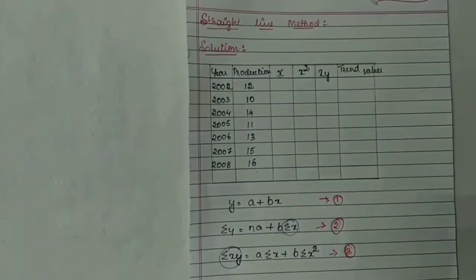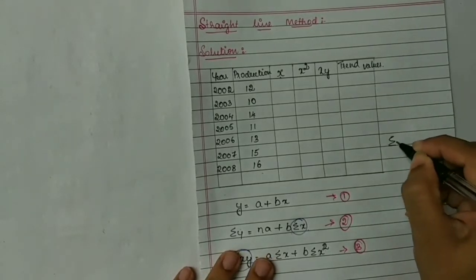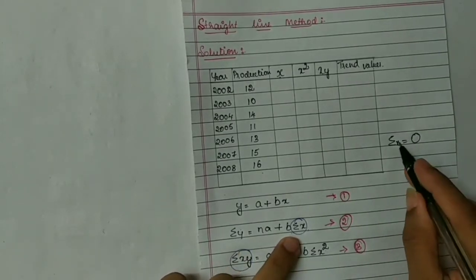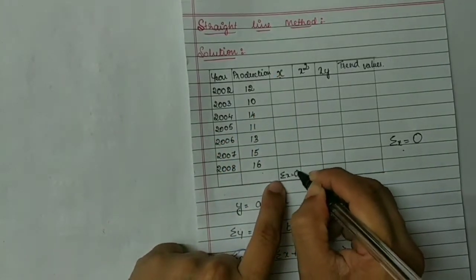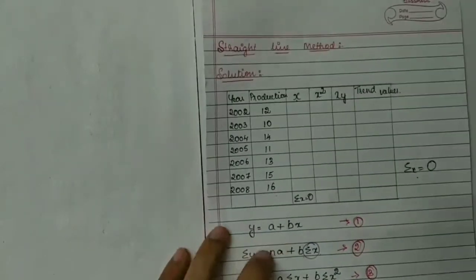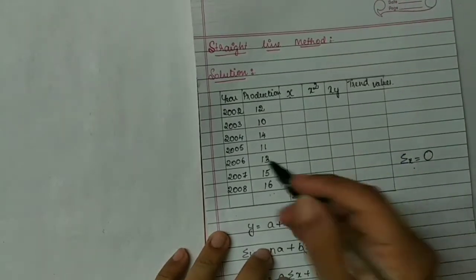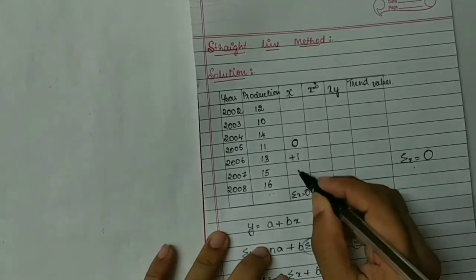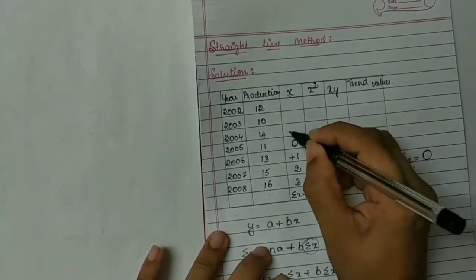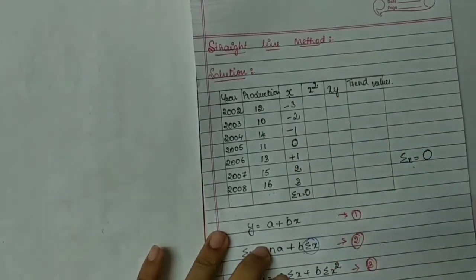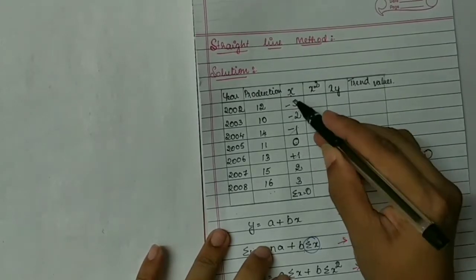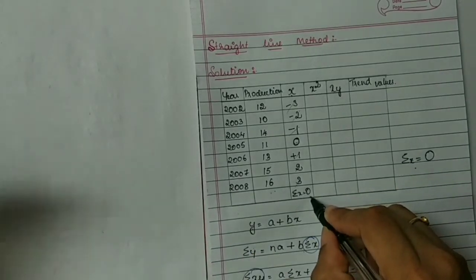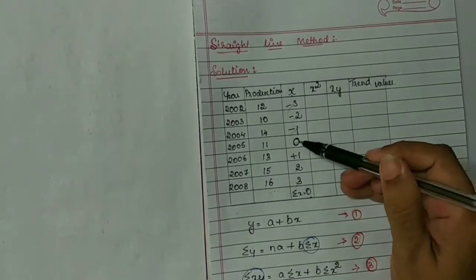According to the equation, you should always remember that summation x should be 0. First, you should prove that summation x is 0. Now, there are 7 items. The middle one will be 0. After 0, everything will be positive: plus 1, 2, 3. Before 0, it will be minus 1, minus 2, minus 3. Then 1 and minus 1 cancel, 2 and minus 2 cancel, 3 and minus 3 cancel, and summation x will be 0.